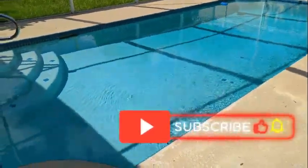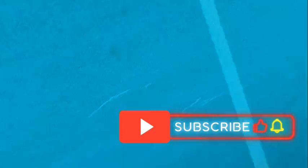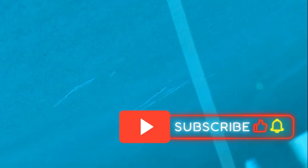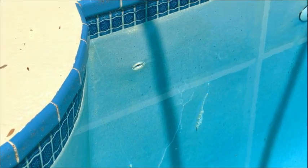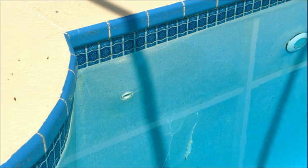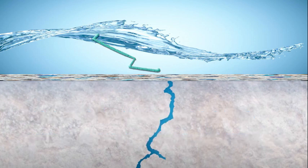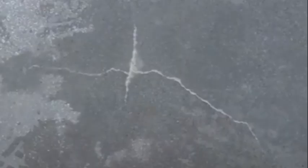Pool surface delamination can happen anytime during the pool's life — I've seen delamination happen within the first year. Delamination is normally caused by poor plastering. It's when there's a bond failure between the gunite and the plaster or surface that covers it. This bond failure creates a cavity or void between the two.